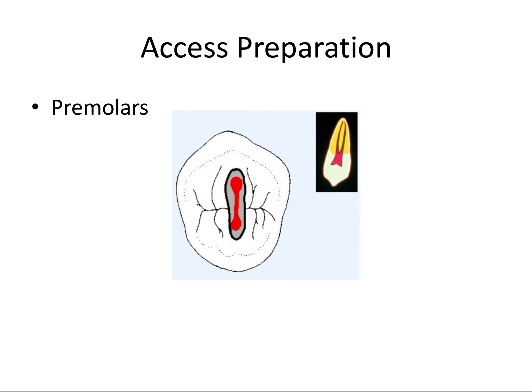Upper and lower premolars can certainly have two canals. One of the board examiners' favorite questions is which premolar is most likely to have two roots — that being the maxillary first premolar. So if it has two roots, it will generally have two canals. A narrower oval-shaped access is the shape of choice for most premolars.